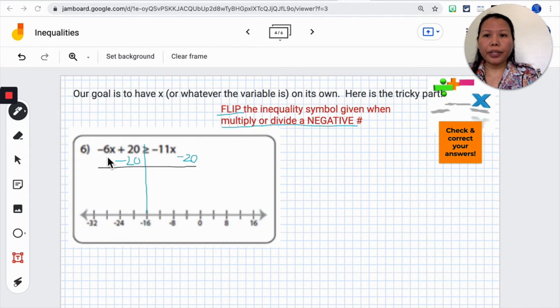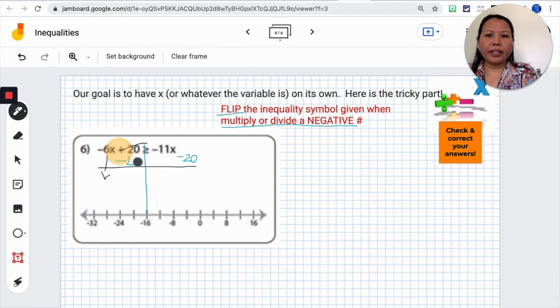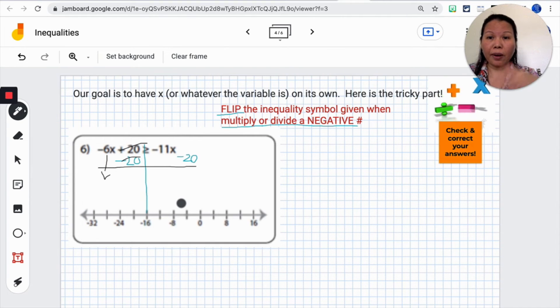What we will do is we will bring down this negative 6x. We will bring that down. The positive and negative 20 will cancel out, but I'm going to take those canceling off because I think that's messy. It's up to you if you want to leave it in there in your problem. I don't mind. And then what we will have on the right hand side is going to be negative 11x minus 20.